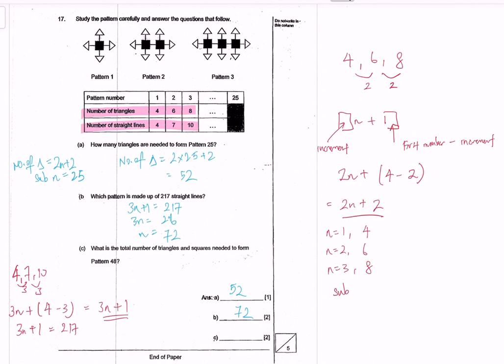And last of all, what is the total number of triangles and squares needed to form pattern 48? So number of triangles, let's work on it step by step. Number of triangles, we already know the formula, right?